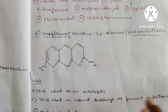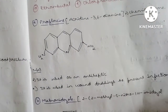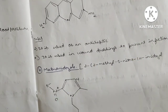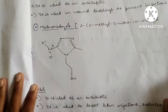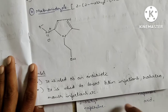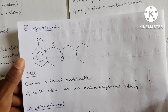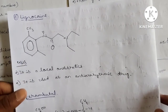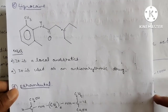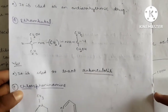Proflavin: An antiseptic used in wound dressing to prevent infection. Metronidazole: An antibiotic used to treat skin infections, mouth infections, UTI (urinary tract infection), and tooth infections. Lignocaine: A local anesthetic used as an anti-arrhythmic drug. Ethambutol: An anti-tuberculosis drug.